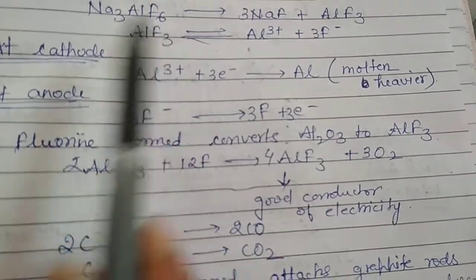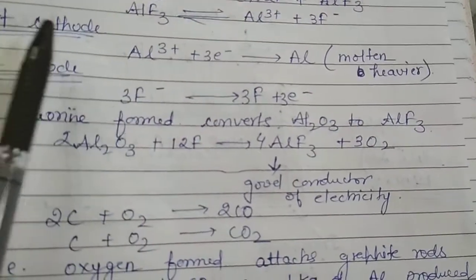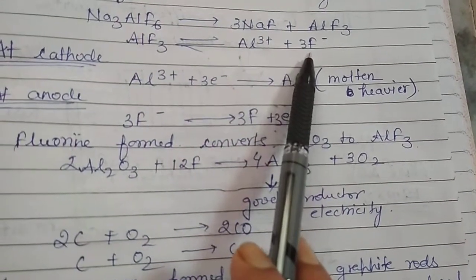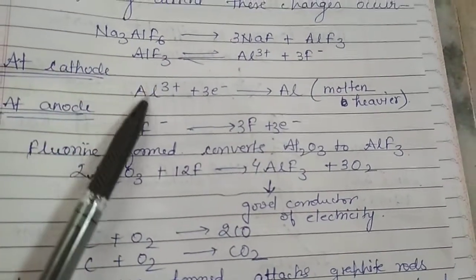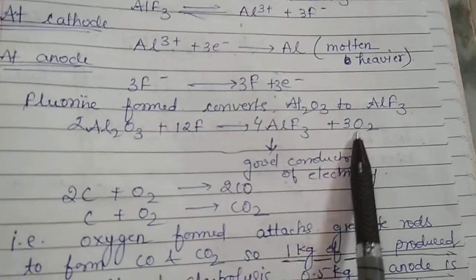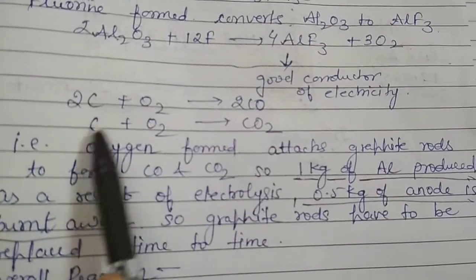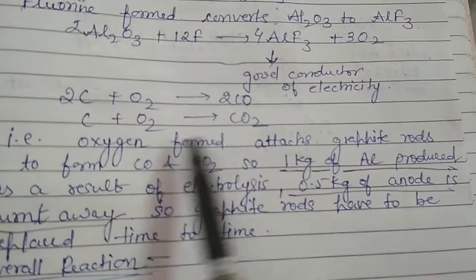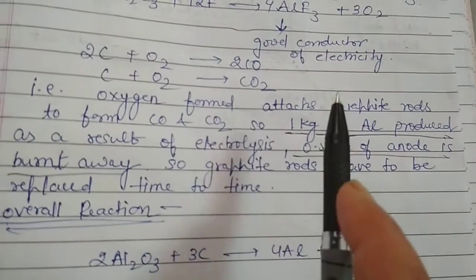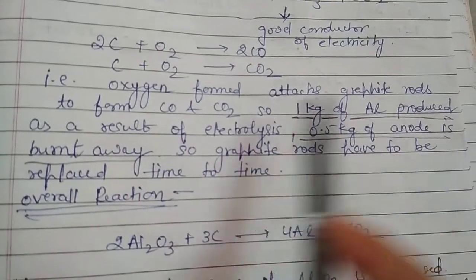We are again getting aluminium fluoride from the alumina. This alumina converts to aluminium fluoride, which can again dissociate into aluminium ion and fluoride ion, and the process continues. During this reaction, oxygen is also formed, which attacks the graphite anode rods and converts carbon to carbon monoxide and carbon dioxide. So oxygen formed attacks graphite rods to form CO and CO₂. In this process, for every 1 kg of aluminium produced, 0.5 kg of anode is burnt away.